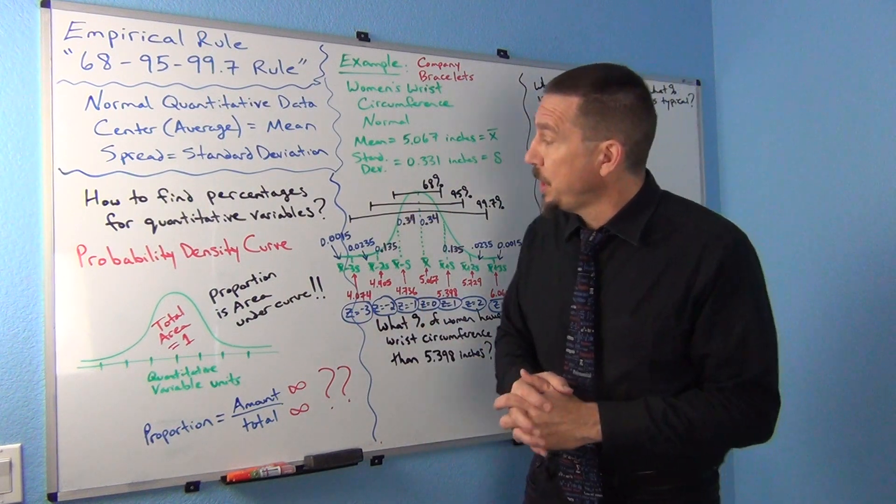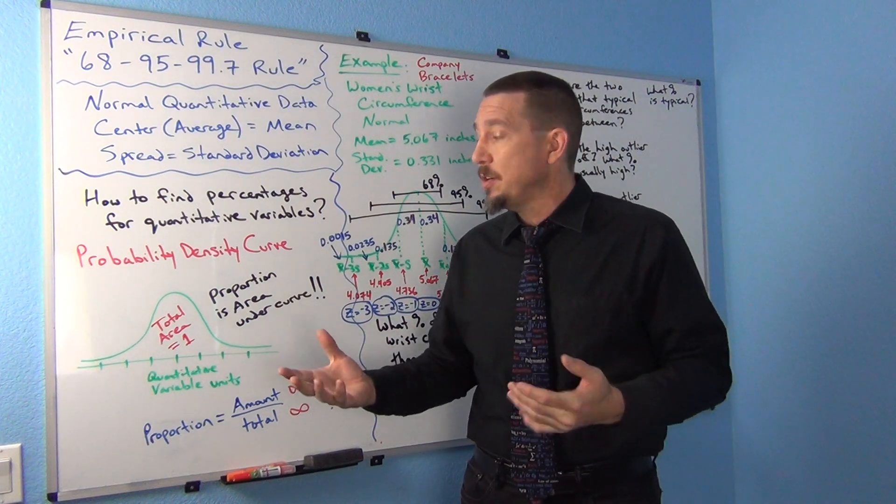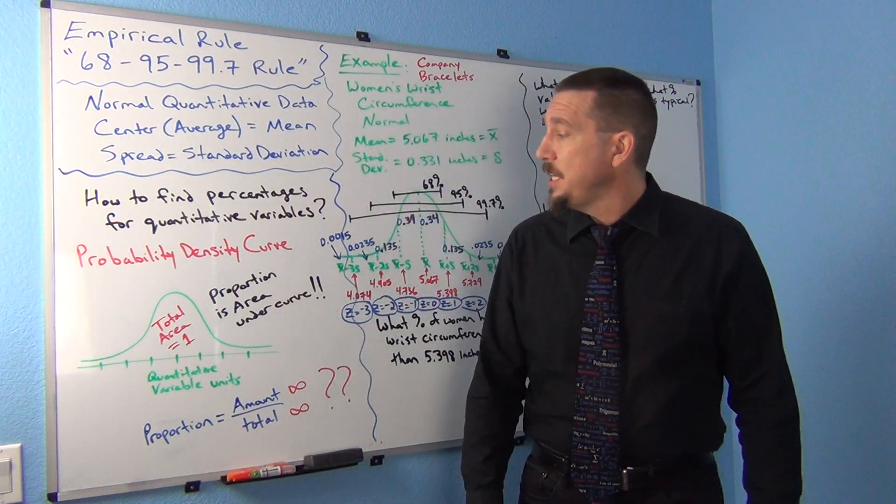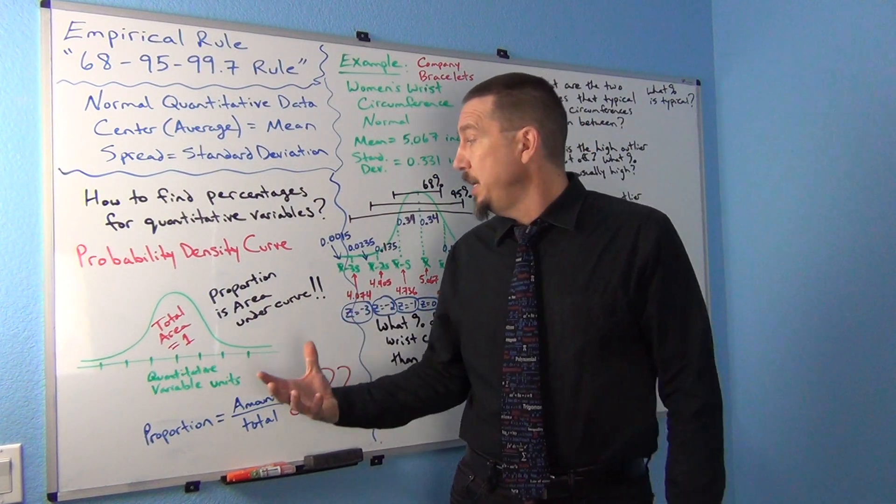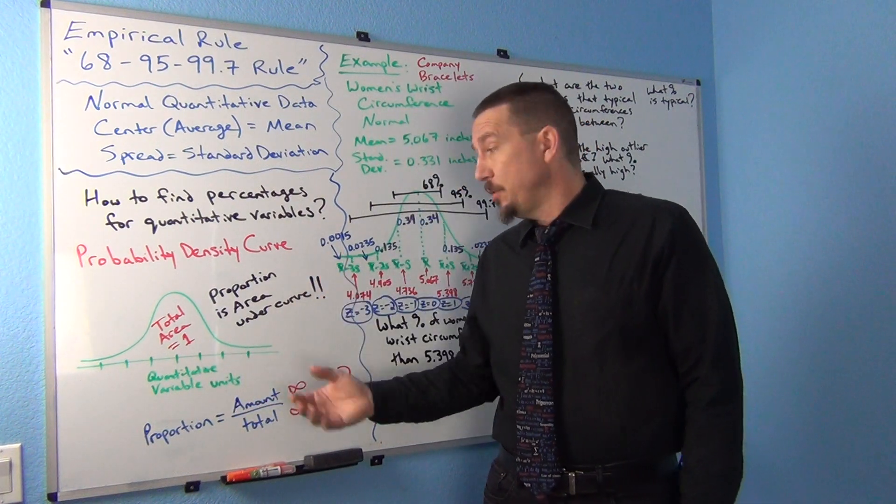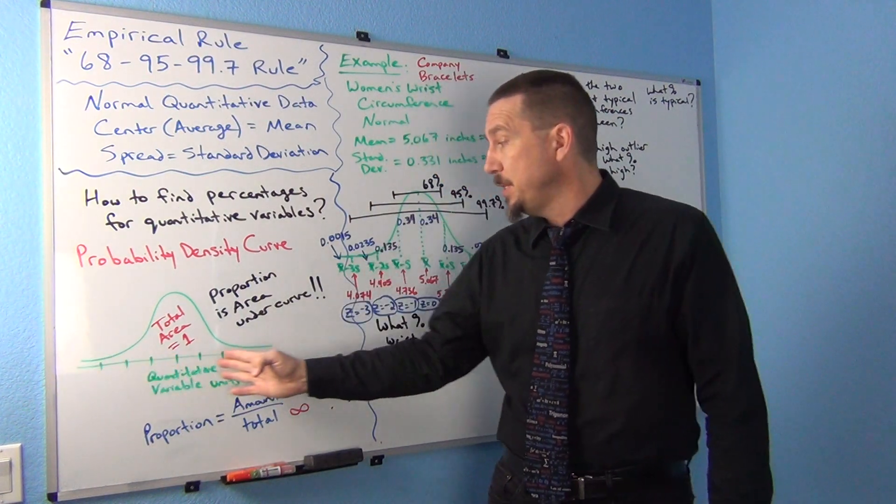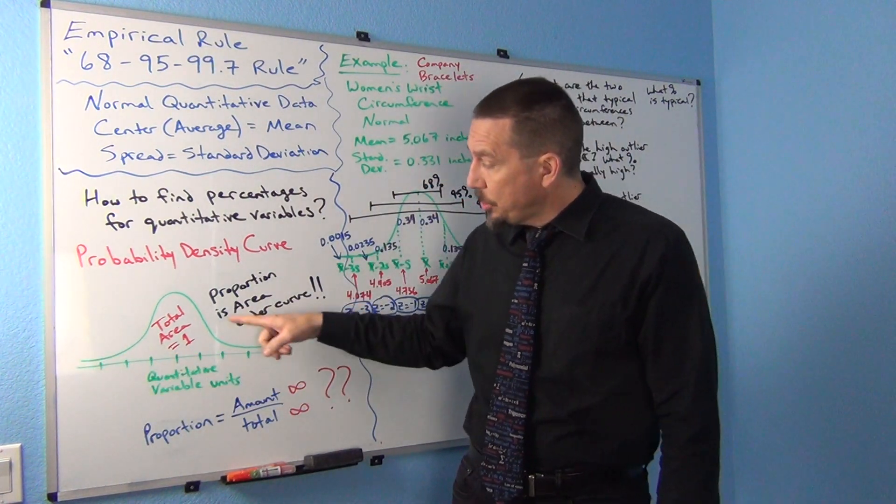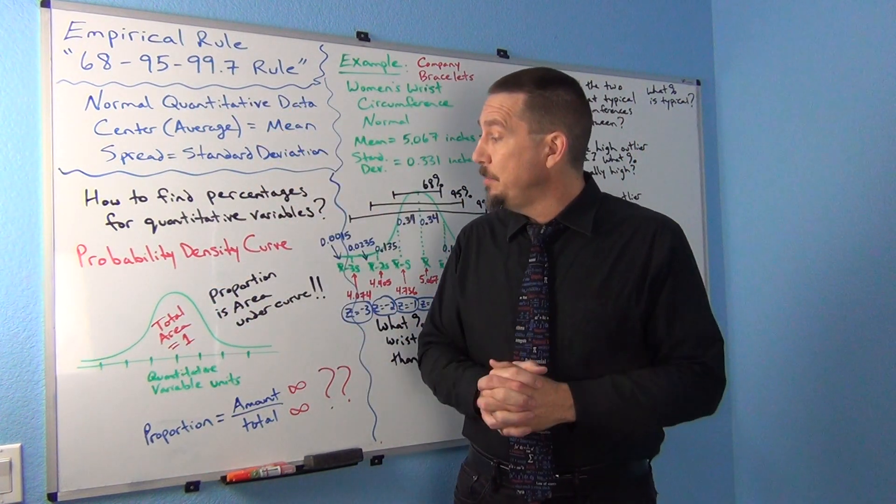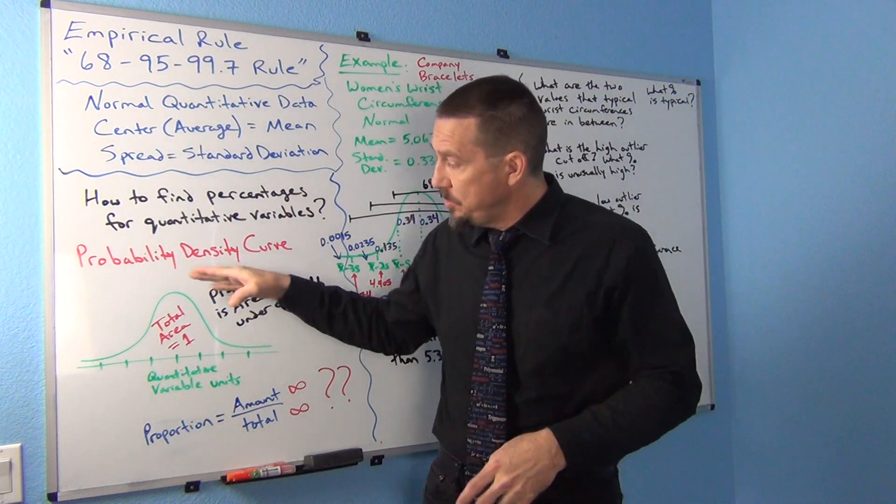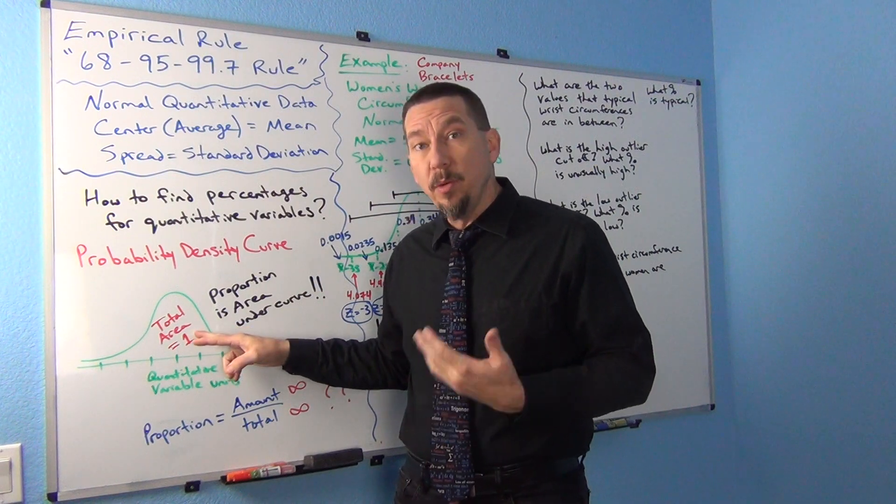So mathematicians a long time ago came up with something called probability density curves. Probability density curves are used a lot. And basically it's a way of calculating percentages based on finding the area under a curve. So kind of think of it this way. You have your continuous scale over here. Maybe this is kilograms or something. And then they drew a curve that sort of matches the shape of the data, which would be normal in this case. We have a nice normal bell shaped curve.